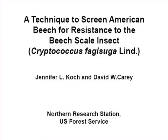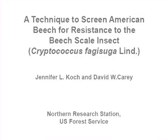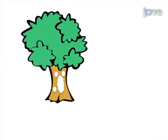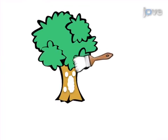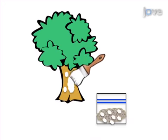The overall goal of this procedure is to distinguish between beech bark disease resistant and susceptible American beech trees. This is accomplished by first collecting adult beech scale insects and their eggs directly from American beech trees.